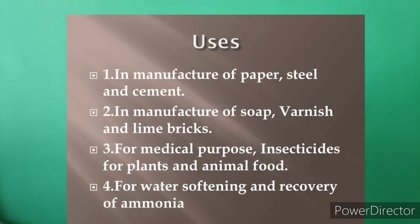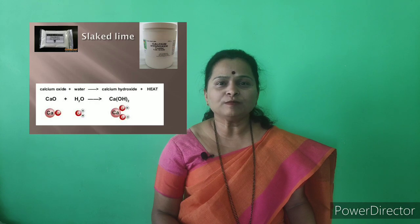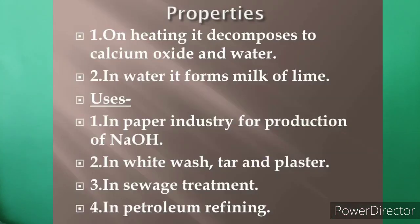Quick lime is also used for medical purposes, as an insecticide for plants and animals, and for water softening and recovery of ammonia. The second type of lime is slaked lime — when calcium oxide is mixed with water, calcium hydroxide (slaked lime) is formed. On heating, slaked lime decomposes back to calcium oxide and water.